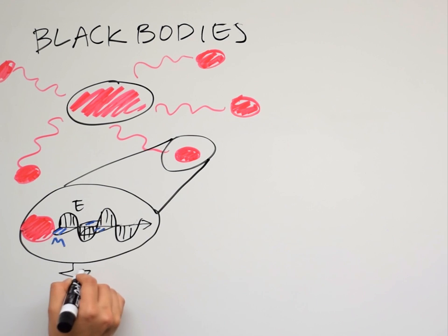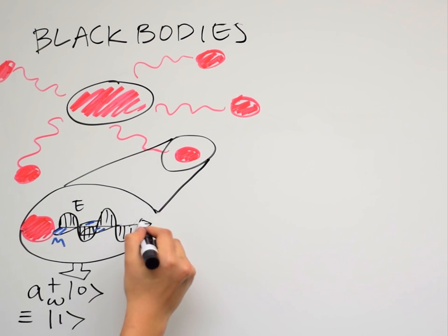Mathematically, this particle can be described by some beautifully simple shorthand, a dagger, which creates a photon of a given momentum from vacuum. This model had incredible predictive power in shaping our understanding of light.